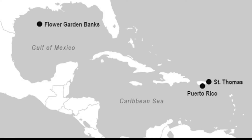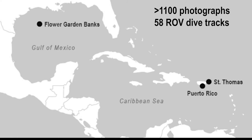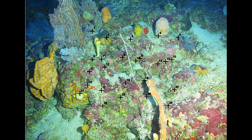We tested the sponge increase hypothesis using over 1,100 photographs from 58 ROV dives off of Puerto Rico, the U.S. Virgin Islands, and the Flower Garden Banks in the Gulf of Mexico. The ROV dives in Puerto Rico spanned the entire range of the mesophotic zone from 30 to 150 meters, so this video will focus on those dives. Percentage cover data were collected by projecting 25 points on the photographs of reef bottom and recording whatever substratum or organism was under each point, with the total depth divided up into 10-meter bins.